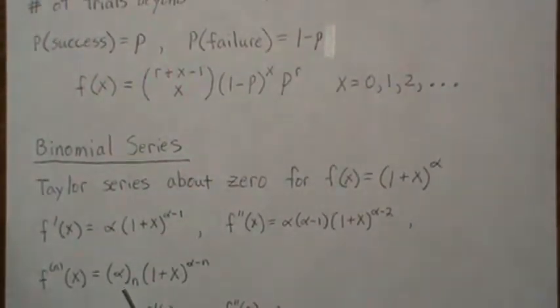Now this notation here is called a falling factorial. This is a falling factorial of one because there's only one term. This is a falling factorial of two terms and you just go down each time, so it's alpha times alpha minus one times alpha minus two, etc.